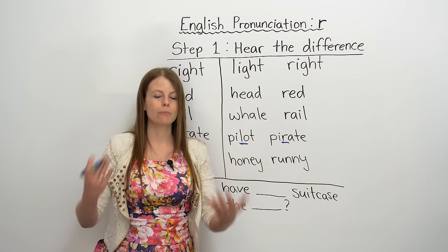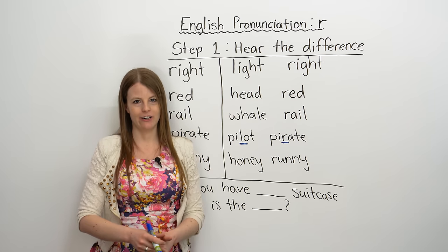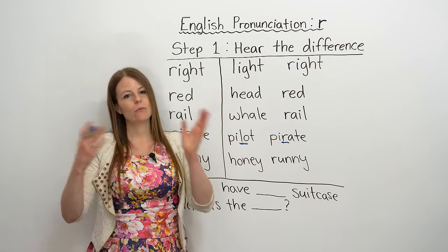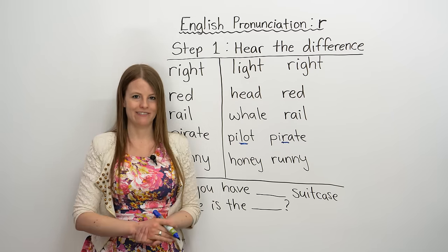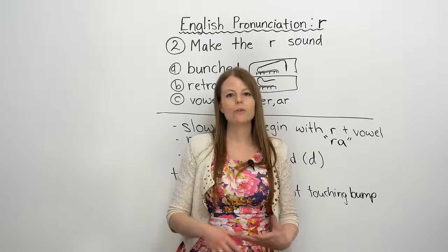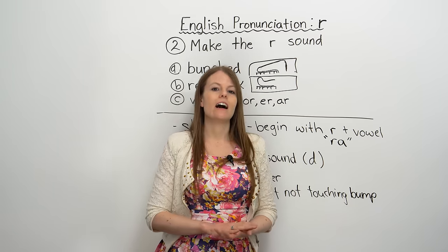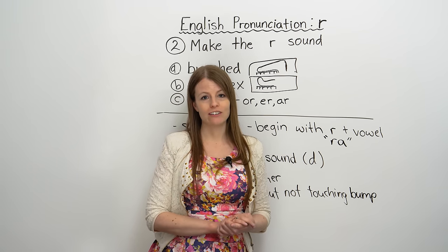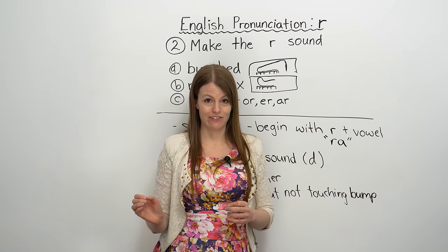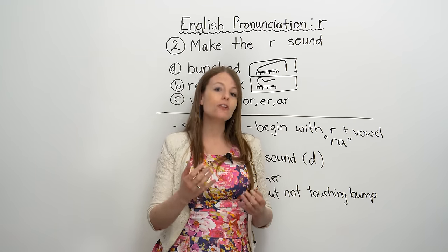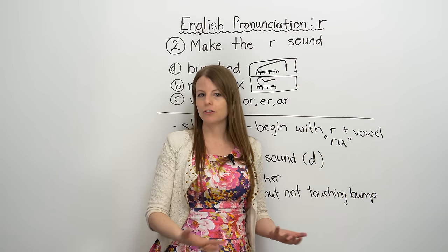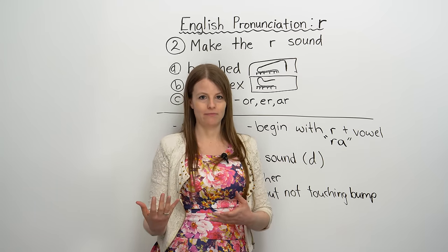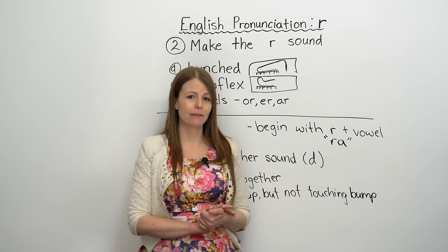So the very first step when you're learning pronunciation is: can you hear the difference? Once you can hear the difference, we're going to do the next step, which is practicing how to say the sound. You may have to practice listening to the R a lot, but once you're ready to practice making the sound, the first important thing to know is that there are different ways to make the R sound in English. If you're having a lot of trouble, maybe you've been taking classes and just can't get that sound — it might be an idea to try a different way to pronounce R, because there's more than one way.